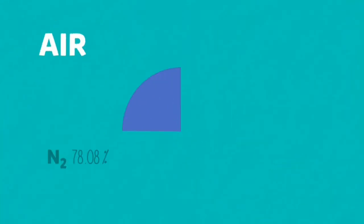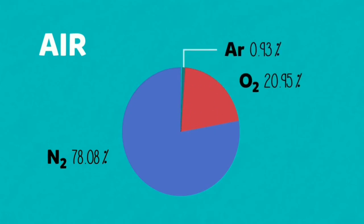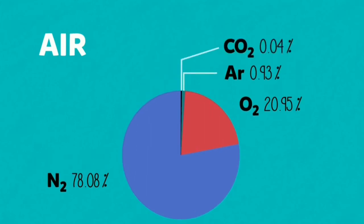Air today is 78.08% nitrogen, 20.95% oxygen, 0.93% argon, 0.04% carbon dioxide, and between 0 and 4% water vapor.